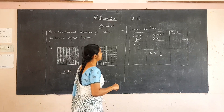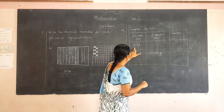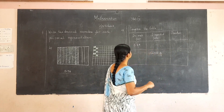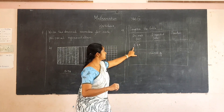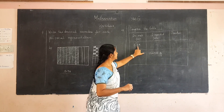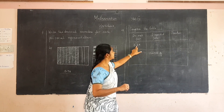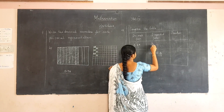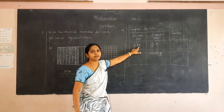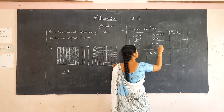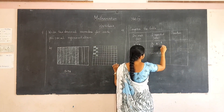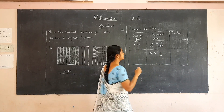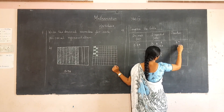Next, complete the table. The decimal form is given and we are going to find the expanded form and the fraction. The whole number part is zero, so leave that. In the decimal part, in the tenths place we are having six, so it is six by ten. In the hundredths place we are having nine, so it is nine by hundred. This is the expanded form. The fraction is sixty-nine by hundred.